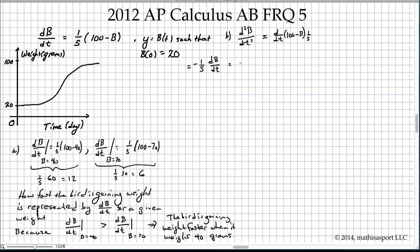And that can of course be written as negative one-fifth times what we're given for dB/dt, it being a common feature when we take the second derivative of having to substitute back in what we know about the first derivative. And so where are we? We're at negative one over 25 times 100 minus B.